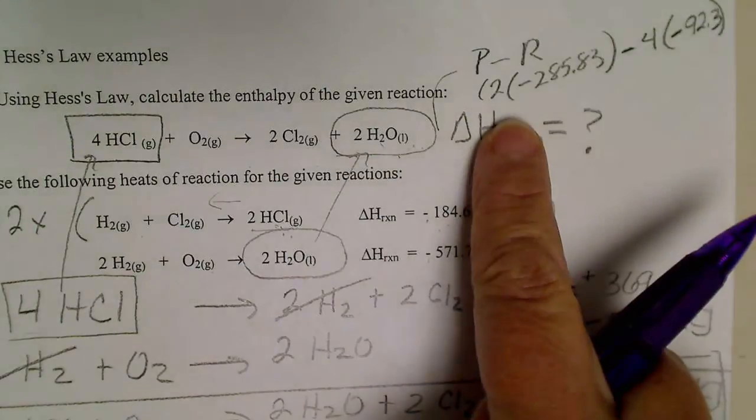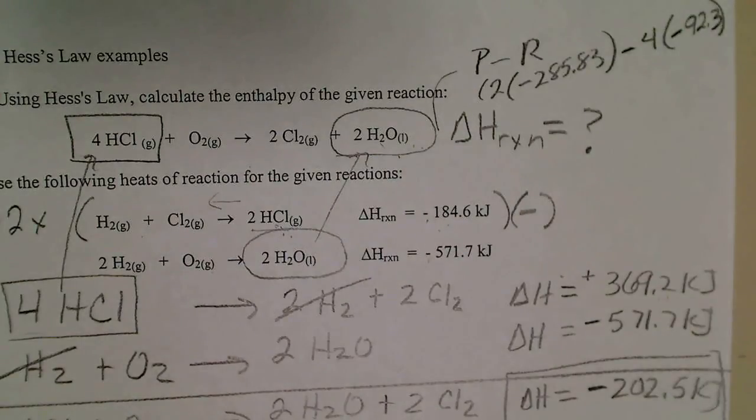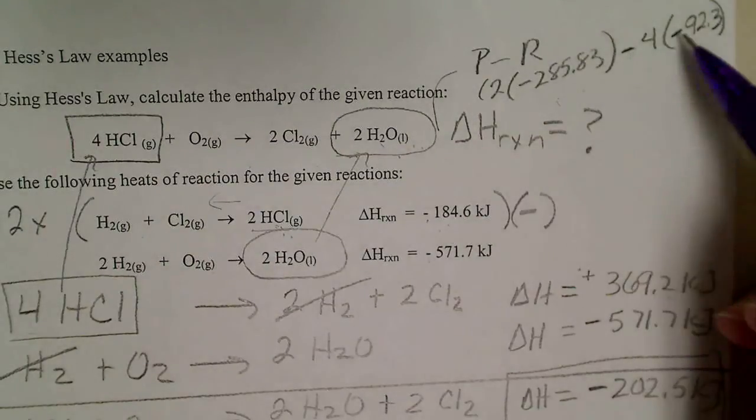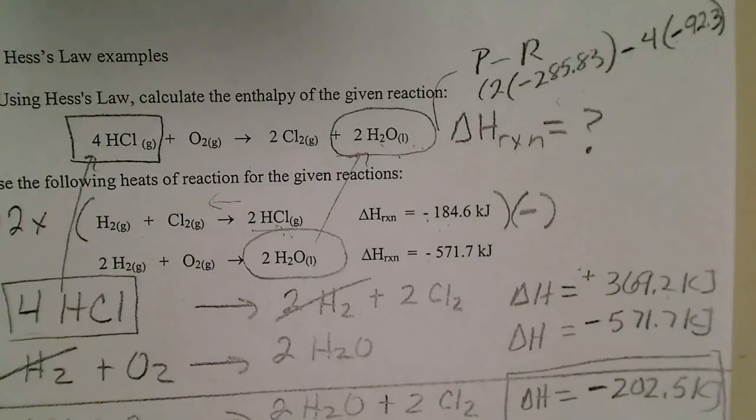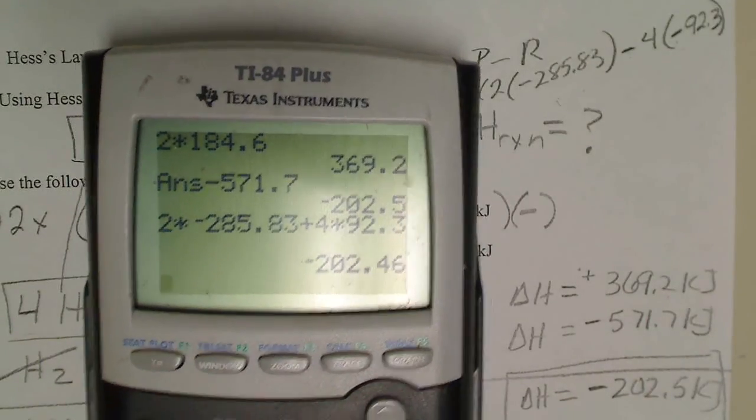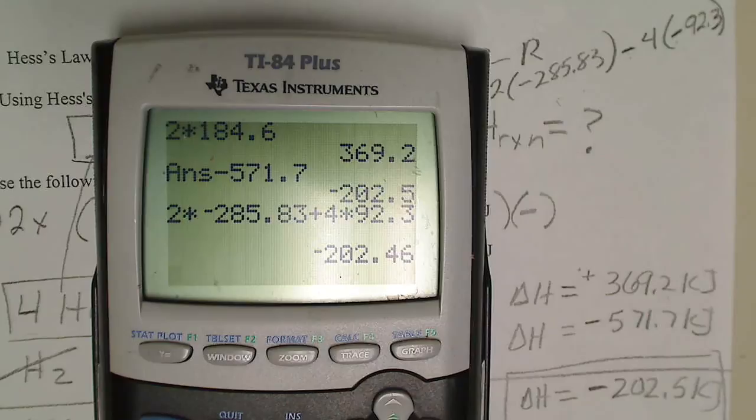And then if I just do that math there, two times negative 285.83. I better check that number. I've got water memorized because it's in so many. Yeah, that is correct. So 285.83. And then a negative times a negative is a plus. Plus four times 92.3. So if we do that on the calculator, we still get the same value, negative 202 kilojoules, that we calculated using Hess's law.